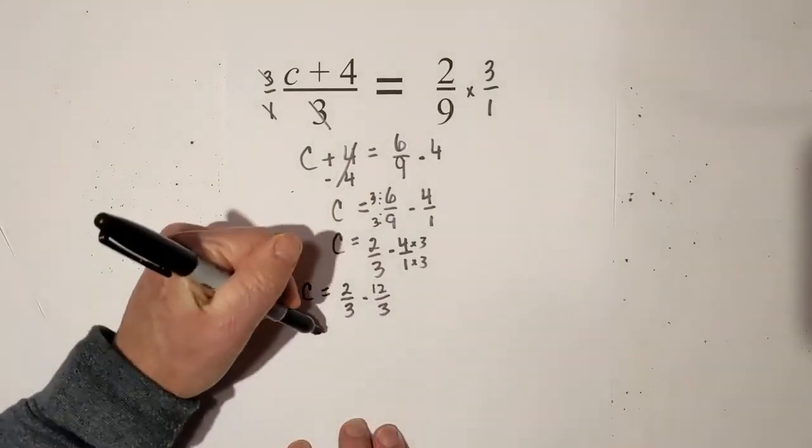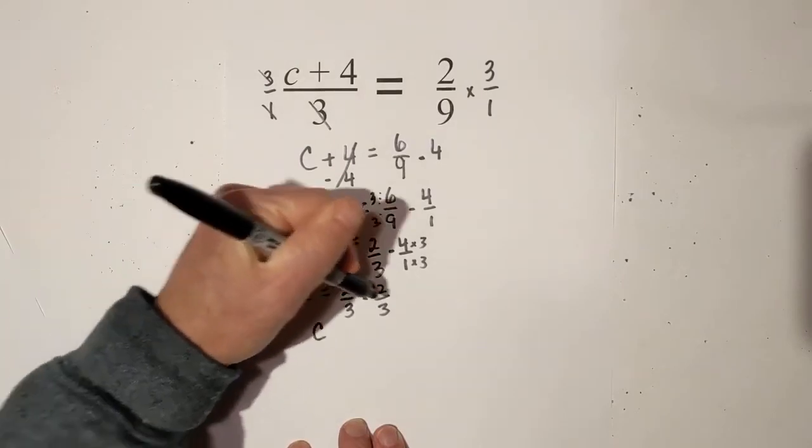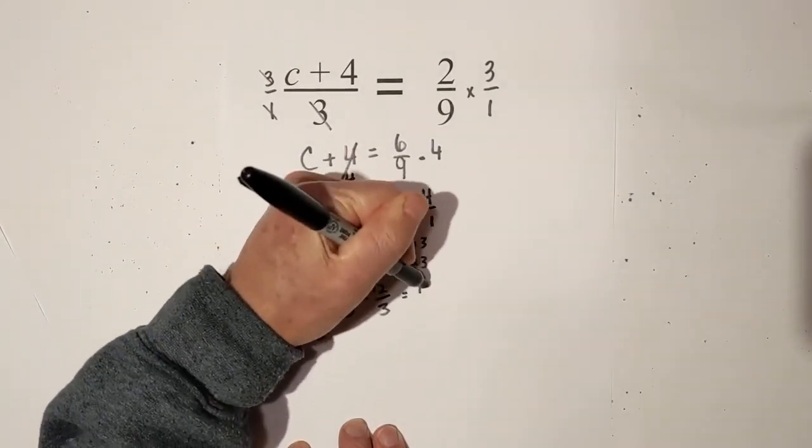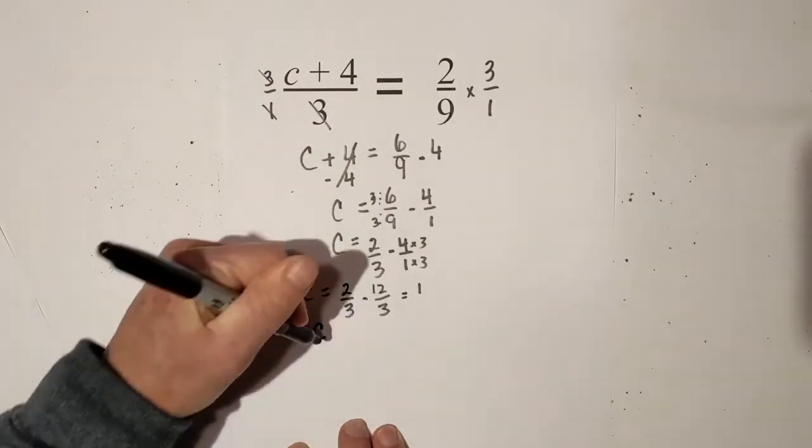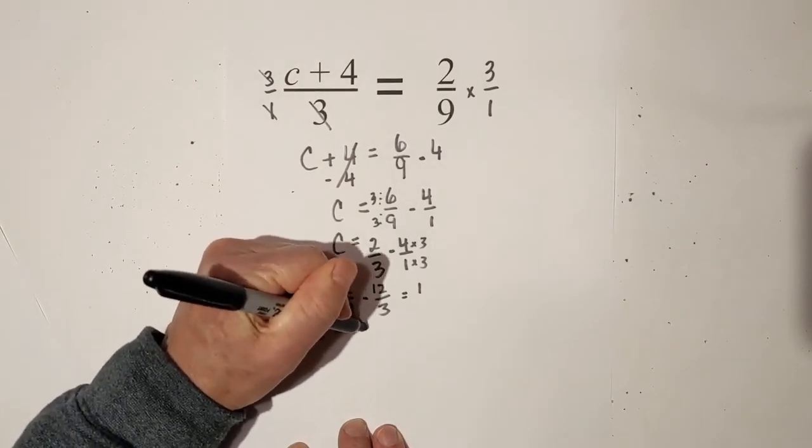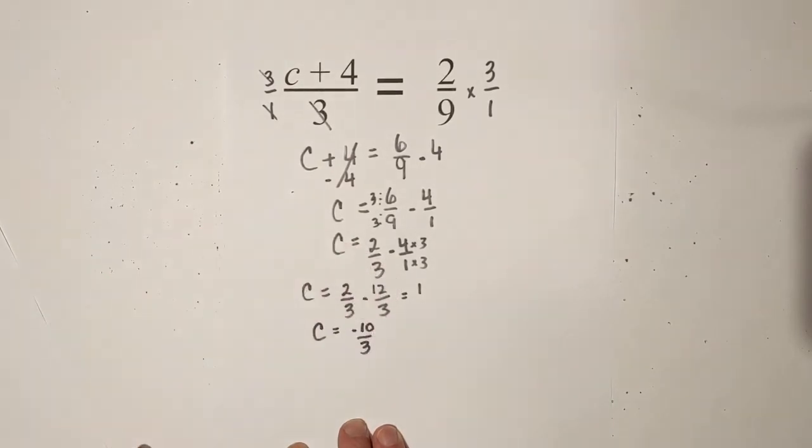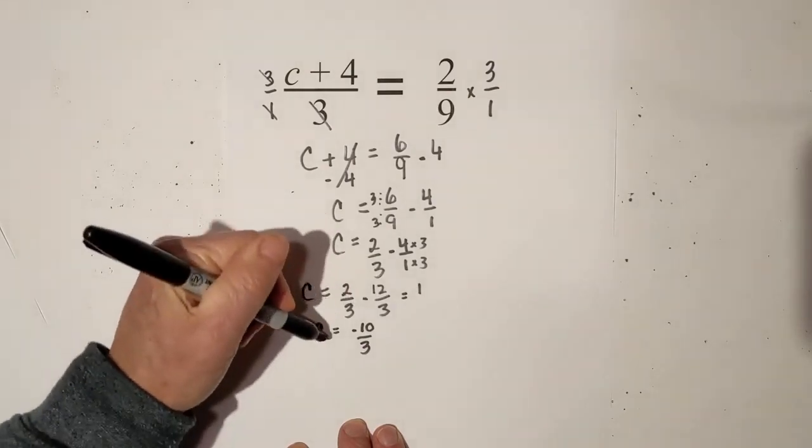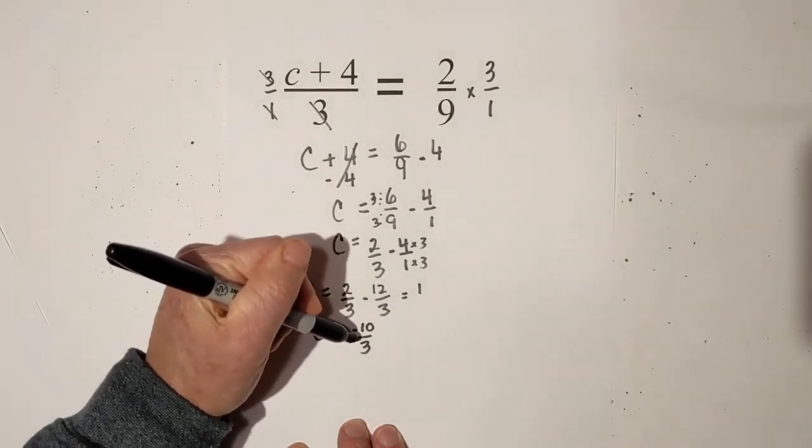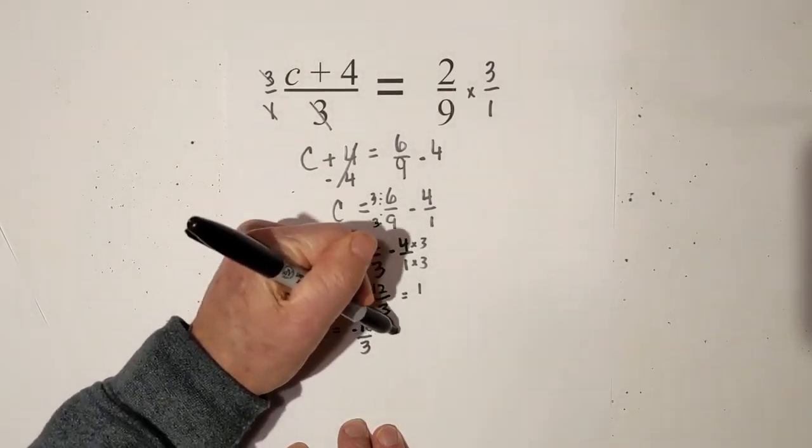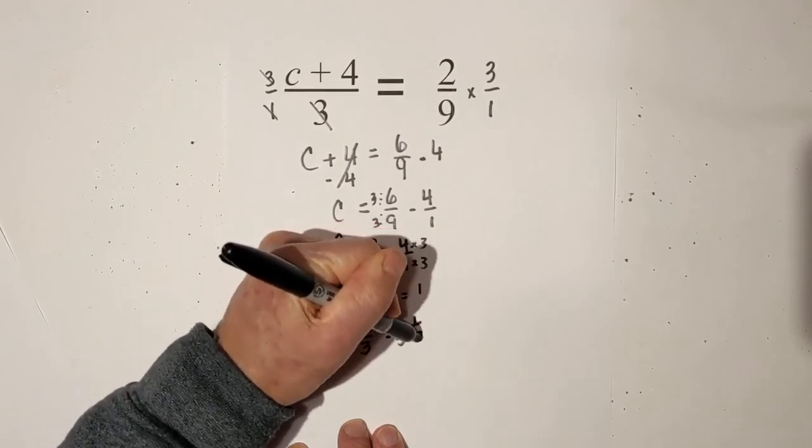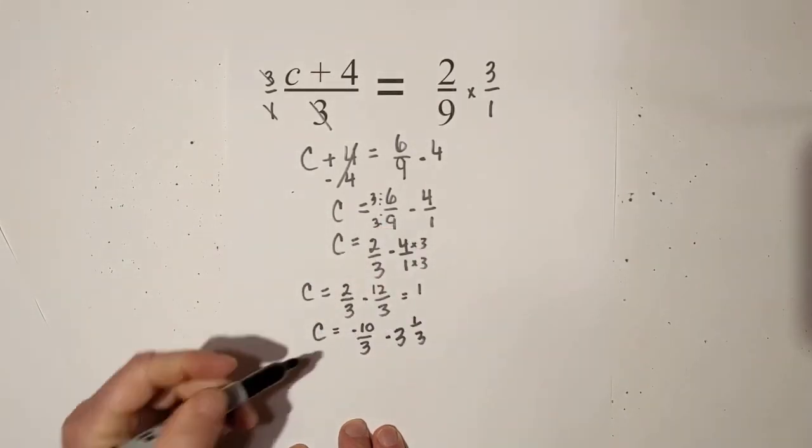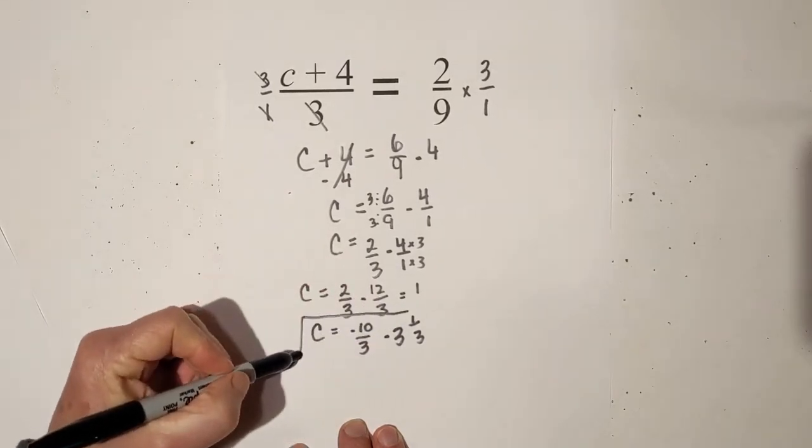And then if you would like, that can become a mixed fraction. Three goes into ten three times with one left over, so that is c equals negative three and one-third. So there's your answer.